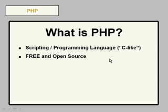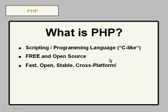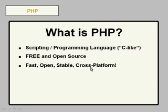You can't see the source code unless a particular company wants you to see it. PHP is fast, open, and stable, but importantly it's cross-platform. You can use a Linux production server, a Windows development server, a Mac testing server — whatever you'd like — and you're going to be able to use PHP the same across the platforms. It's extremely cross-platform.